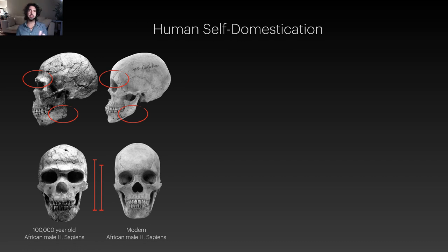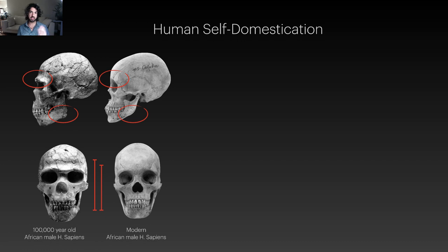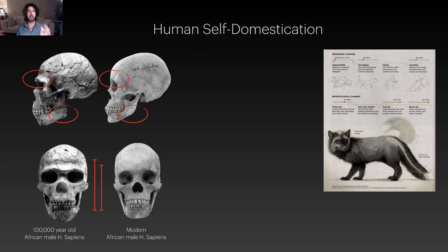Interestingly, the changes we've seen in humans parallel the changes seen in that experiment on Russian foxes from last class. Recall: 45 generations of foxes were selectively bred, with only the 20% most willing to approach a human — the tamest — bred into the next generation. Compared to a randomly bred control group, this tame version went through a suite of changes that made them domesticated: they became more juvenile in form, sexual dimorphism between males and females shrank, they became more playful, got floppy ears, and had a shorter tail.